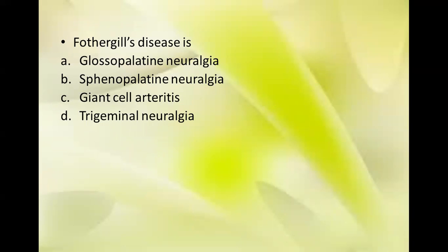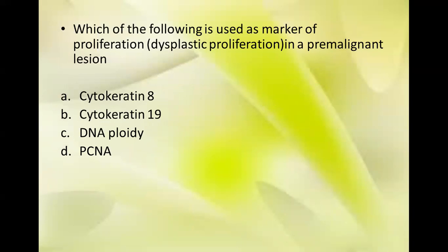The next question is very direct. Options: glossopalatine neuralgia, sphenopalatine neuralgia, giant cell arteritis, trigeminal neuralgia. The answer is D, trigeminal neuralgia. The next question: which of the following is used as a marker of proliferation, that is dysplastic proliferation, in a pre-malignant lesion? Options: cytokeratin 8, cytokeratin 19, DNA ploidy, and PCNA.